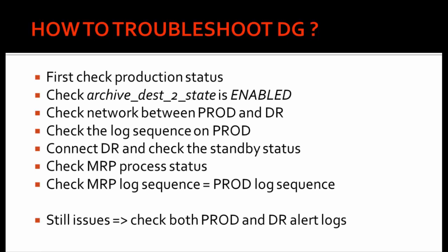Next, we need to connect to the DR server and check the standby status. We check the standby status because you can start the MRP process only when your standby server is at minimum in mount state. If your standby server is in no-mount state or is not up and running, then there is an issue, so we need to check the status of the standby server.